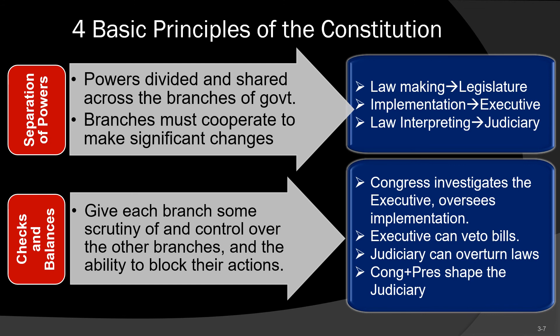Congress also gets to oversee the implementation of laws it passes. For example, if Congress passes the Clean Water Act and assigns the Department of Environmental Protection to implement it, Congress has the ability to investigate and monitor whether that department is fulfilling what Congress wanted. If the executive branch doesn't do what Congress intended, there's a conflict and penalties can follow.